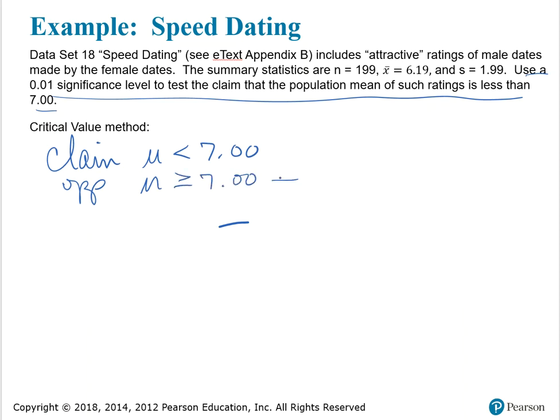This contains the condition of equality, so we want to keep that in mind when we set up our null and alternative hypotheses. H sub 0 is mu equals 7.00, and H sub 1 is mu less than 7.00, and this is where our claim ends up.